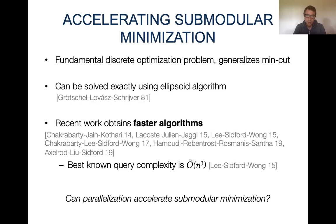A natural way to accelerate submodular minimization is via parallelization. All of the previous results in the recent work on accelerated submodular minimization study the query complexity, so they are in a purely sequential setting. One might wonder if we can further accelerate submodular minimization by using parallelization.